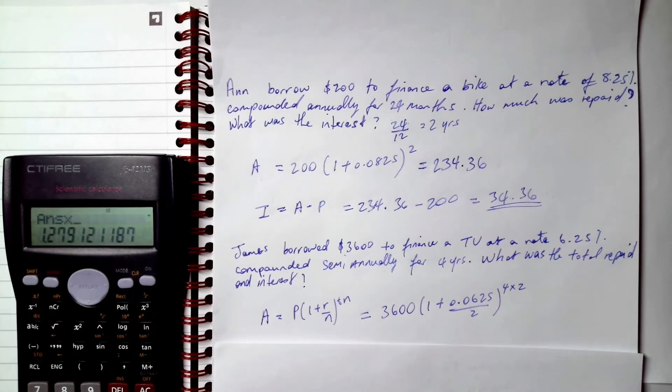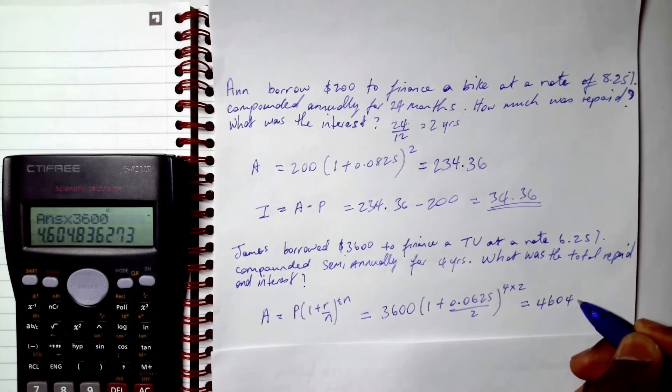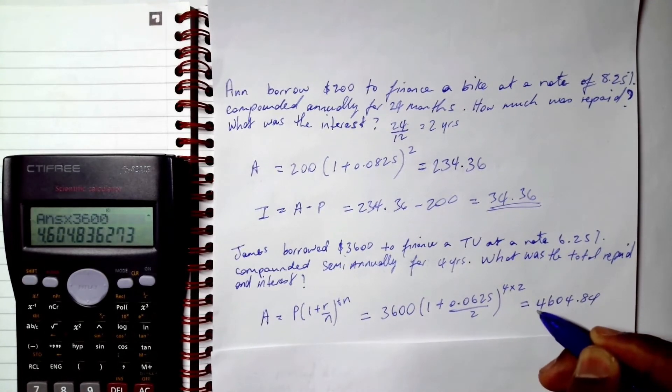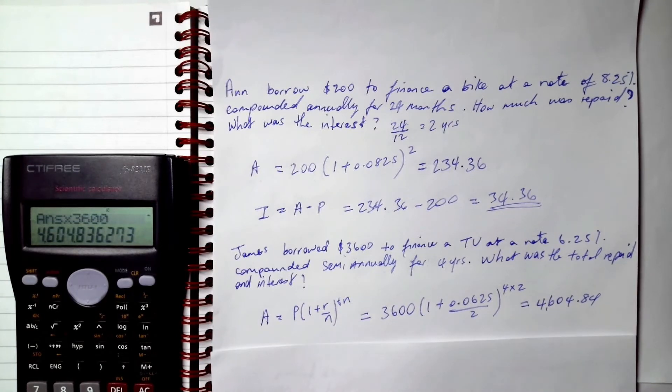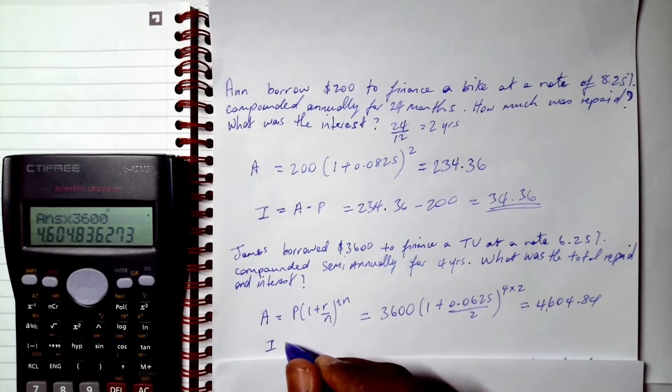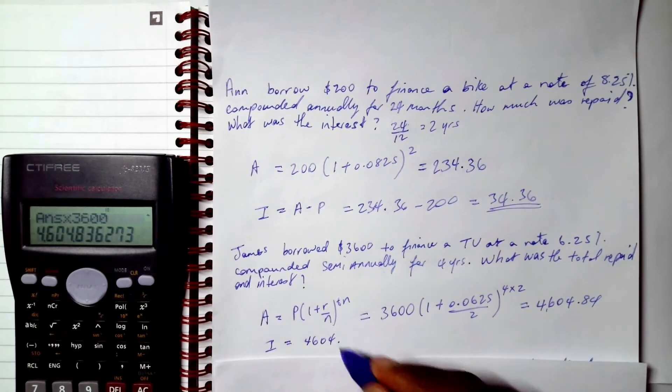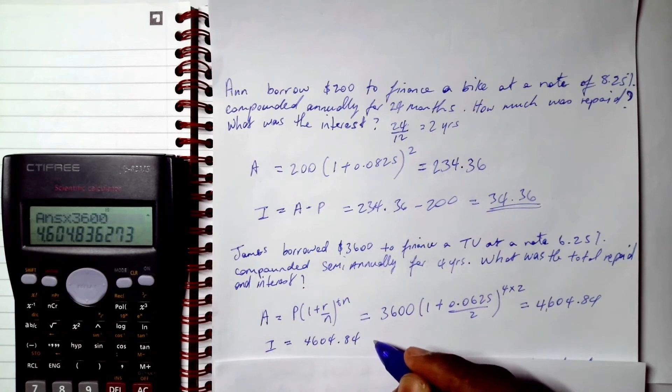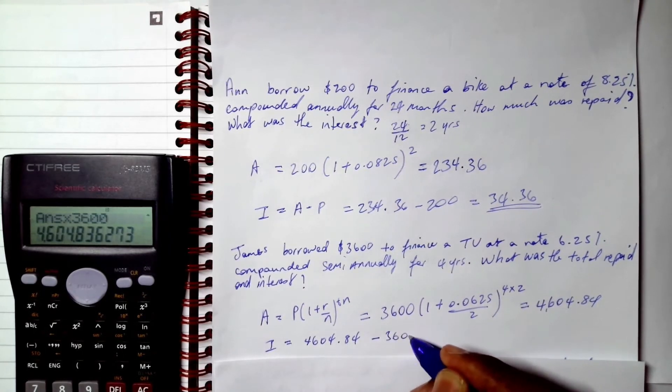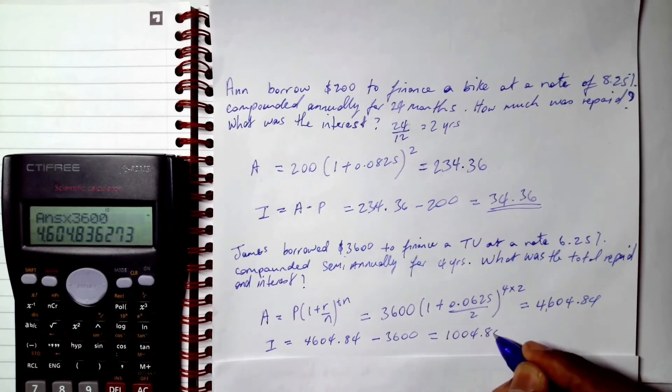And then multiply that by 3,600 and our result is 4,604.84. All right, and that is our accumulated value when the interest is compounded semi-annually. And to find the interest, it's just going to be I = 4,604.84 minus 3,600 which is going to be equal to 1,004.84.